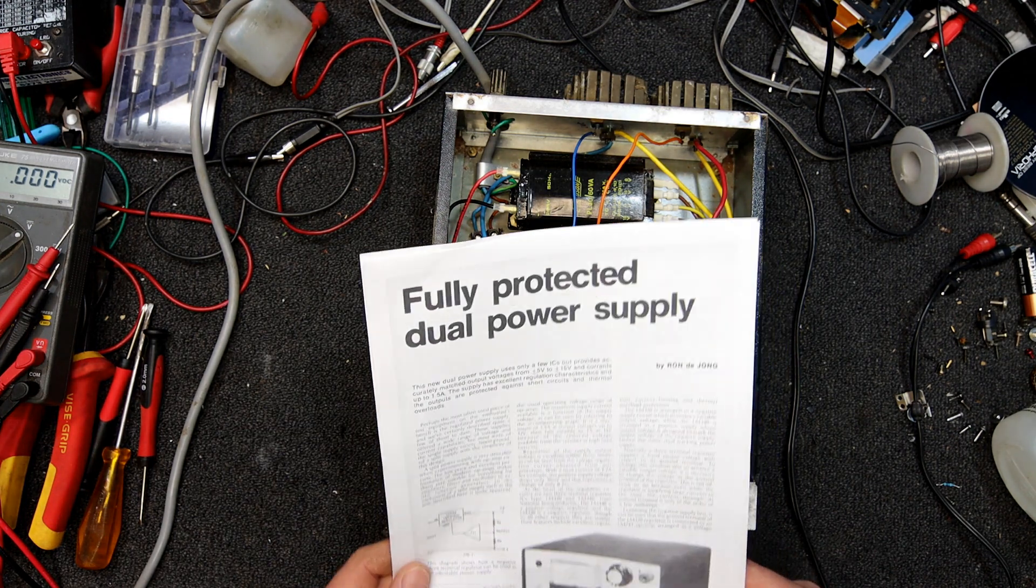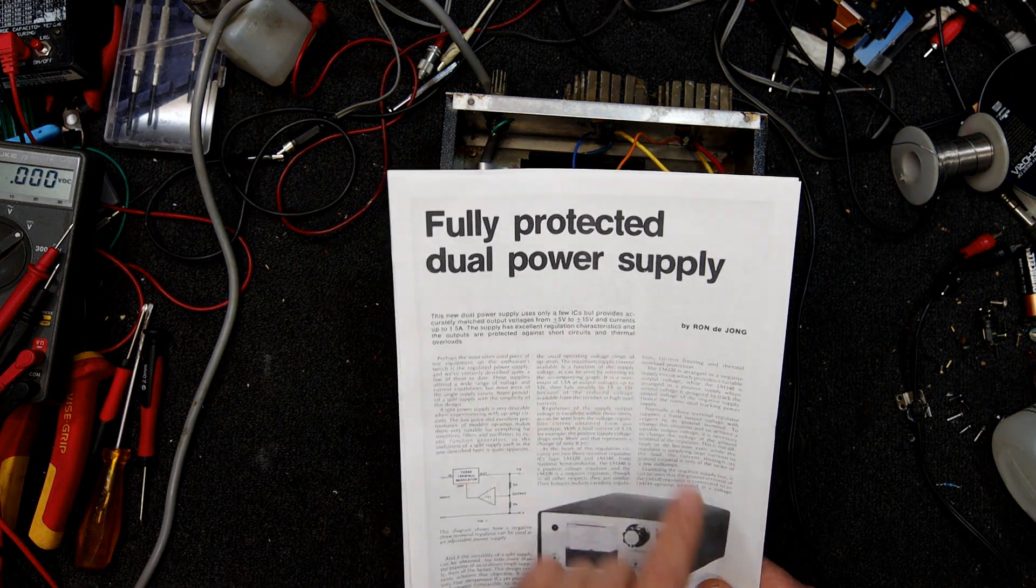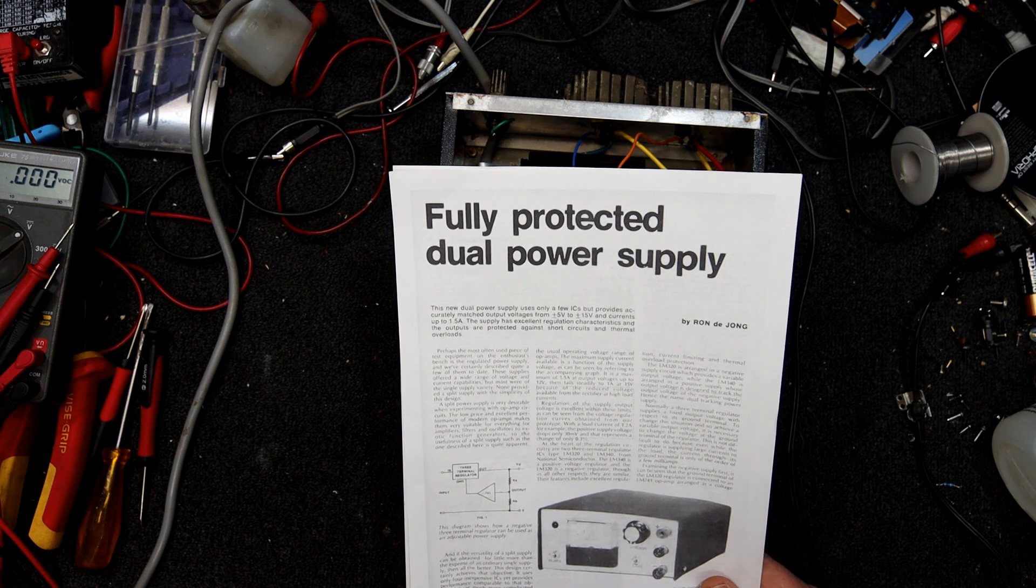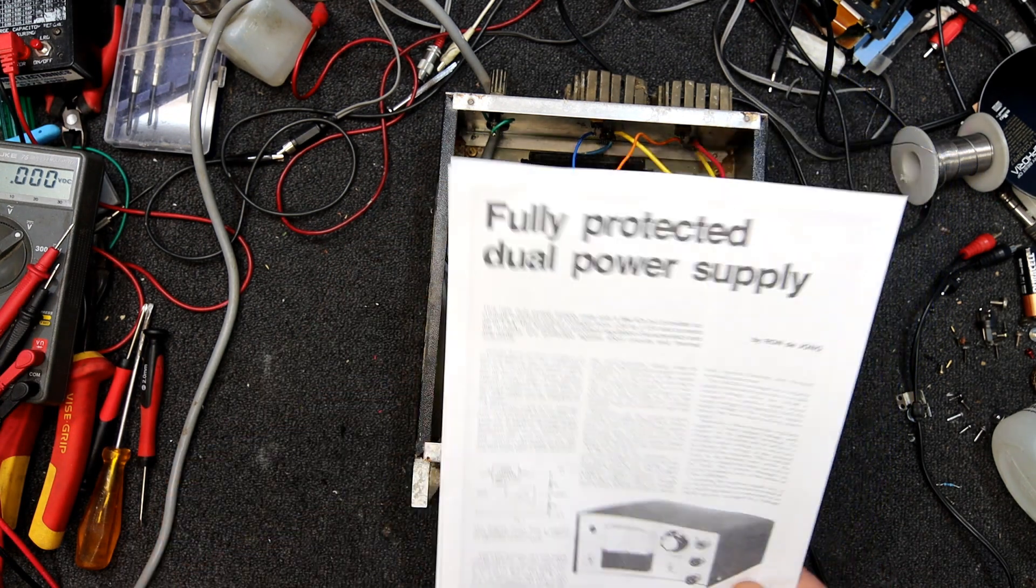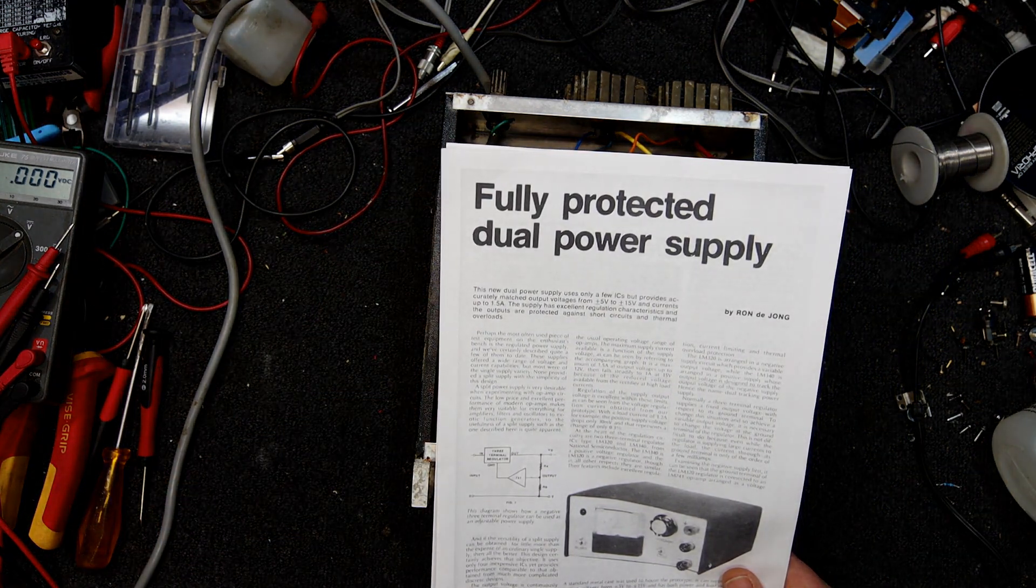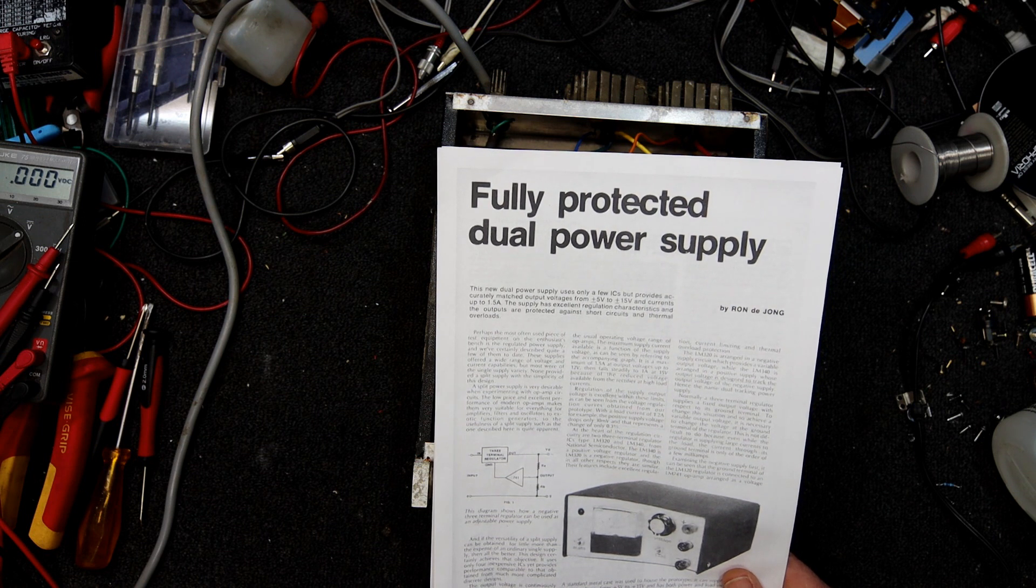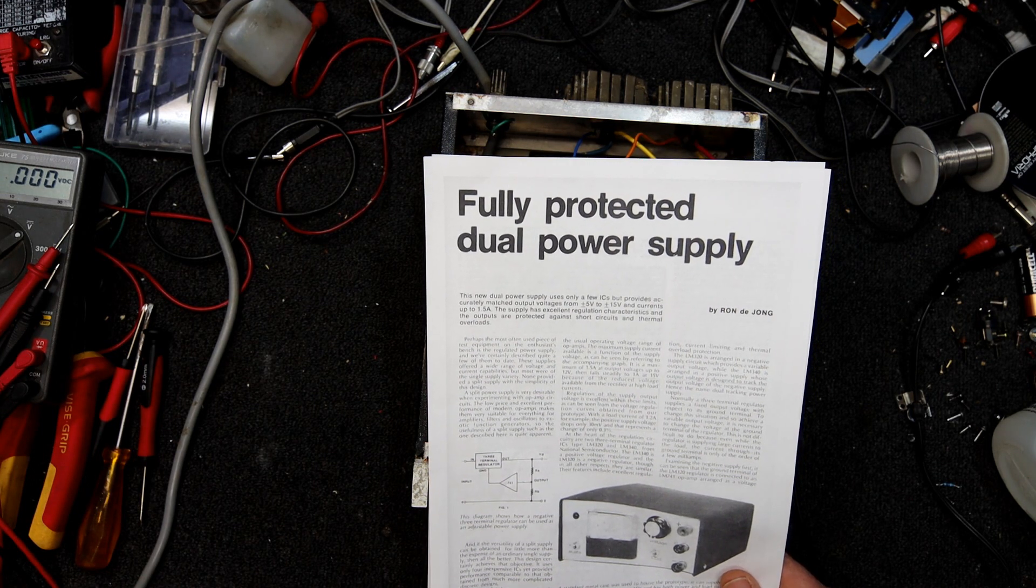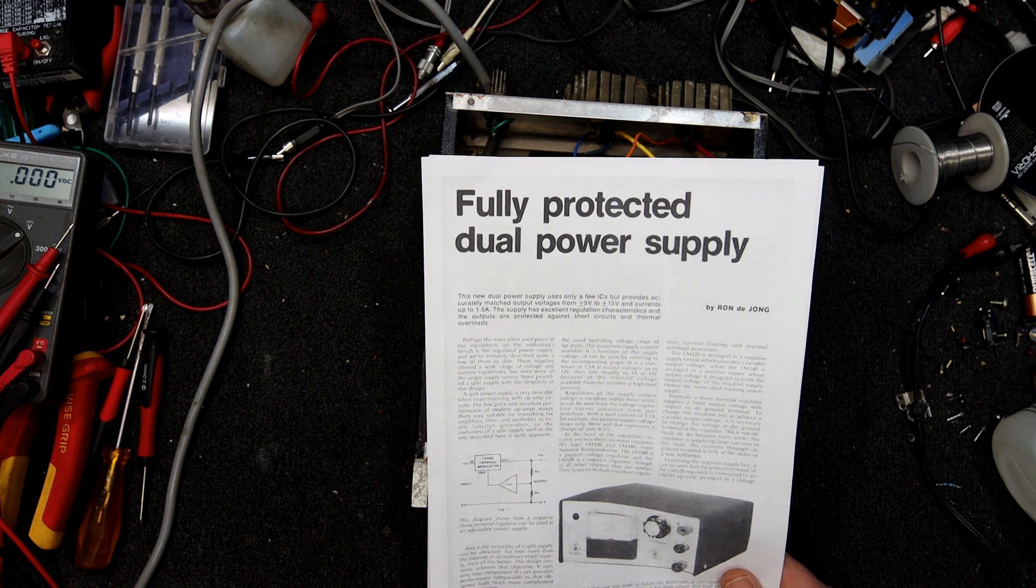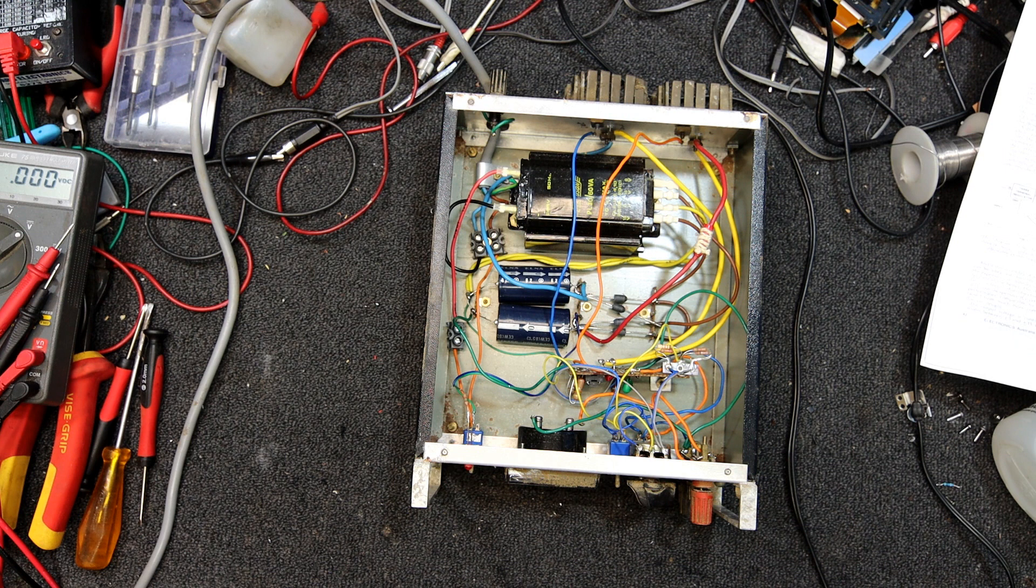This power supply is rated to put out 1.5 amps I believe. Yeah 5 volt to plus or minus 5 volt to plus or minus 15. Current's up to 1.5 amps. I think that transformer's rated at 2. It does say 2 amp max there. And it's got excellent regulation. Outputs are protected against short circuit and thermal overloads. I think they're basically saying it was mainly designed to run if you want to play around with op amp circuits and stuff which use dual power rails. And you want them ideally tracked to each other so they're exactly the same.